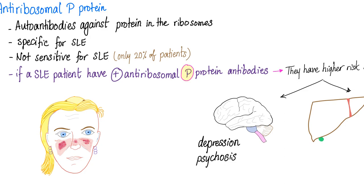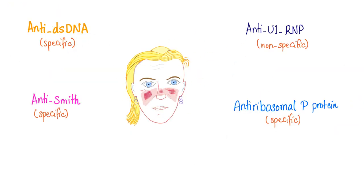Anti-ribosomal P-protein: for lupus. Not sensitive, but specific. If a patient has lupus and they have positive anti-ribosomal P-protein, they are at higher risk of liver disease and CNS problems such as depression or psychosis — lupus can make you crazy. Here is a quick summary of lupus: a lupus patient can have anti-double-stranded DNA, anti-Smith antibodies, anti-U1 RNP antibodies, and anti-ribosomal P-protein antibodies — specific, specific, not specific, specific.